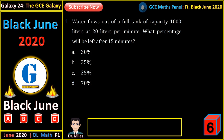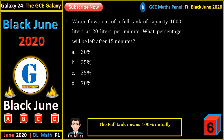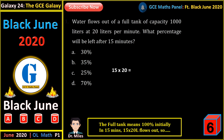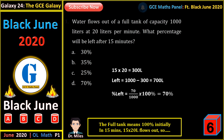Water flows out of a full tank of capacity 1000 liters at 20 liters per minute. What percentage should be left after 15 minutes? The full tank is 100% at the beginning. In 15 minutes, we have 15 times 20, which is 300 liters that will flow out. We will therefore be left with 700 liters, representing a percentage of 70.